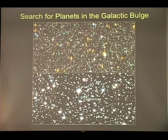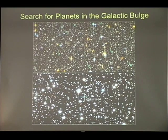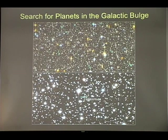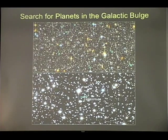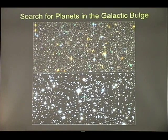Most of the extrasolar planets were discovered in the solar neighborhood, not too far from the sun. But one observation that Hubble did was in the bulge of our galaxy, halfway across. We observed for a whole week 140,000 stars and discovered 16 planet candidates. We found that the frequency of planets is about the same all across the galaxy, which tells us that in our own Milky Way there are billions of planets.